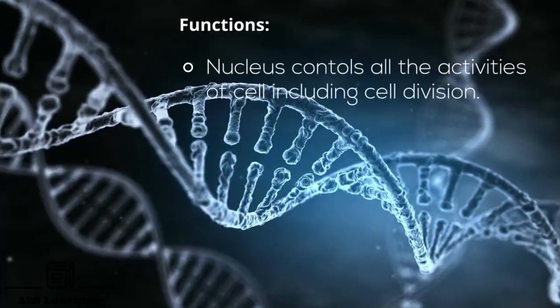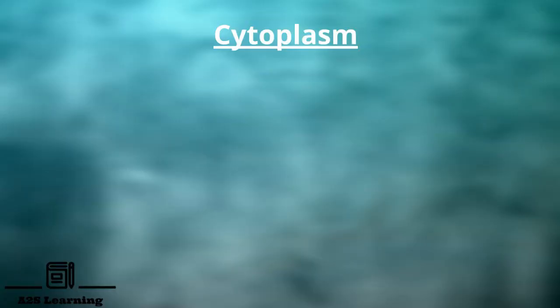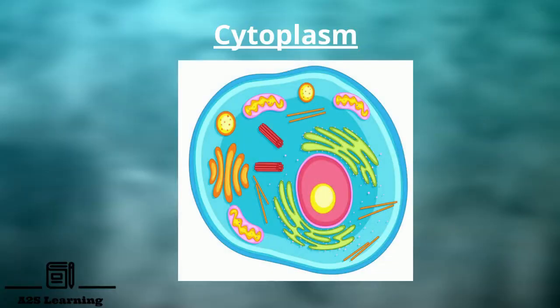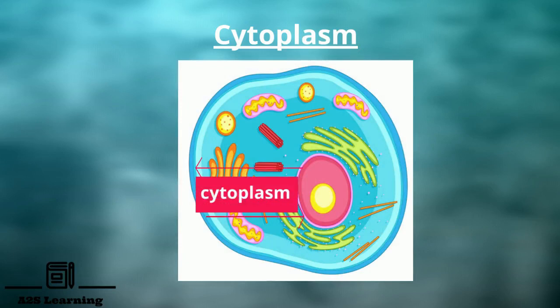Nucleus controls all the activities of the cell including the cell division. Cytoplasm is located between the cell membrane and the nuclear membrane of the cell.